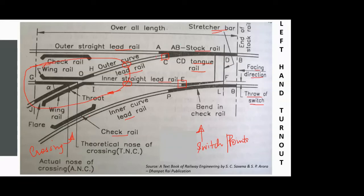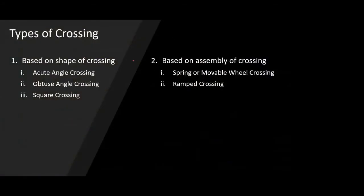Now we are in a position to understand what a turnout is, its components, what a switch or point is, what a crossing is, and the components of those. To end this section: just as we have different types of switches — stub switch, split switch, and various other categories — we similarly have different types of crossings. The classification is based on two parameters: one is the shape or angle of crossing, and the second is the assembly of the crossing.